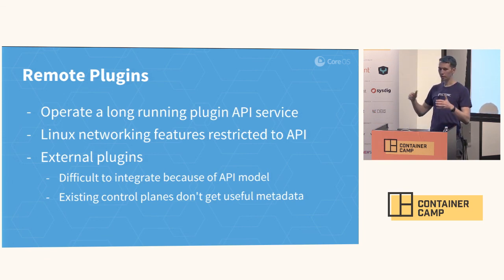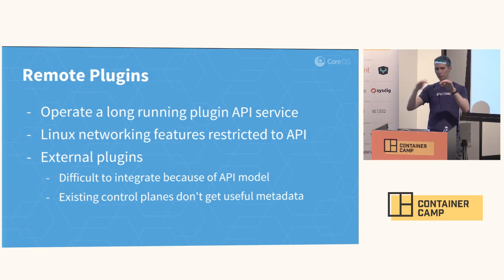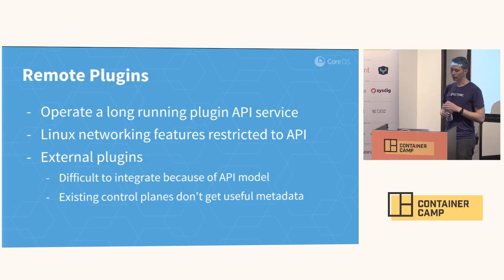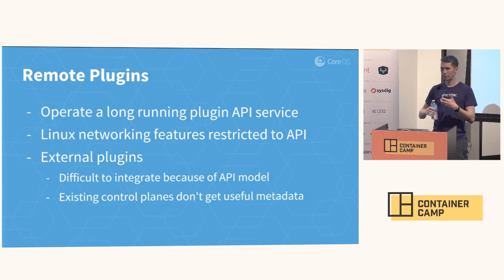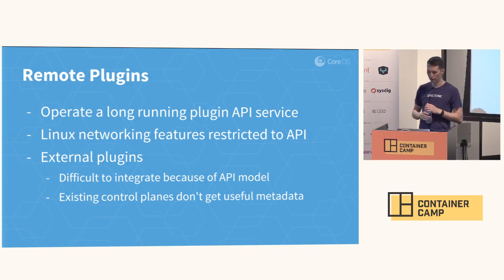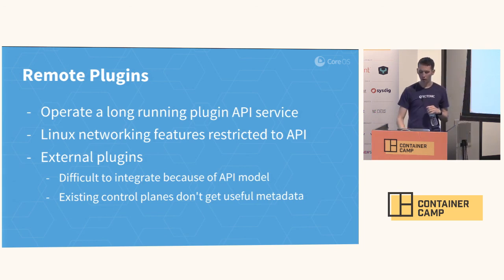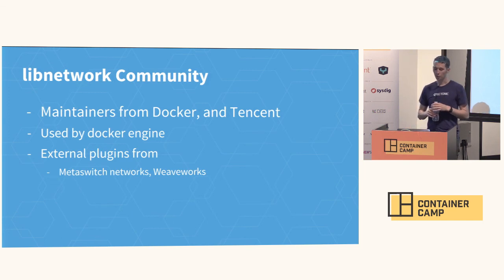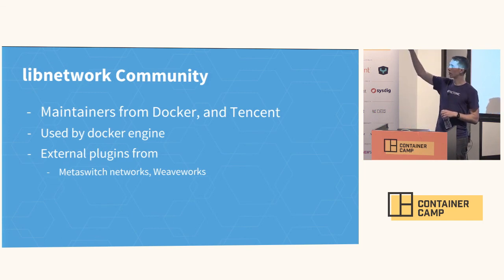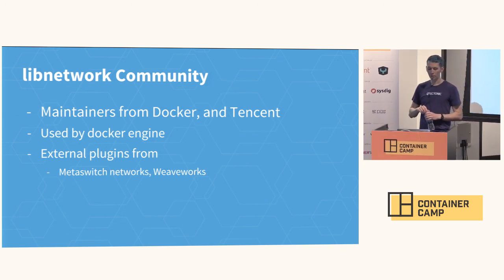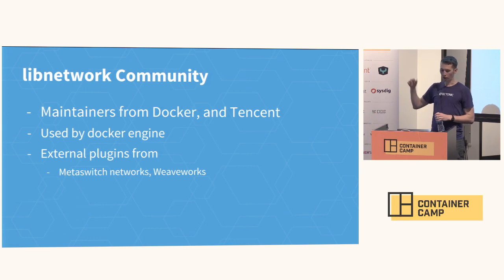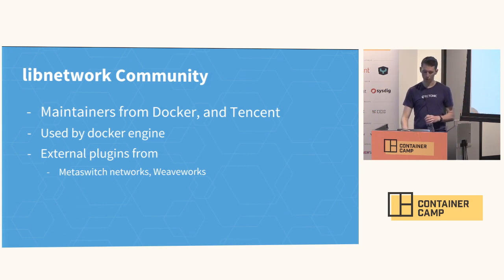The networking features inside of LibNetwork are restricted to whatever the API exposes, because you're talking over this interface — over JSON and HTTP. From what I've heard from other networking vendors, it's sort of difficult to integrate because of this API model, because you're not actually directly manipulating the underlying namespaces. There are some problems with getting the full metadata of the container about what it's actually doing. The LibNetwork community includes Docker and Tencent, which is a large company in China. It's used by the Docker engine, and there are a few external plugins available, such as MetaSwitch Networks, Project Calico, and Weaveworks.